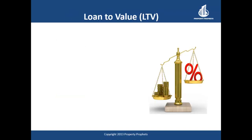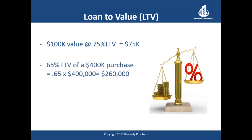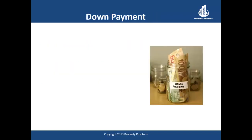The first term you need to become familiar with is loan-to-value. This refers to the amount of loan or mortgage compared to the value of the property. So if a property was appraised at $100,000 and the loan-to-value was 75%, the loan would be for $75,000. If a lender offers you 65% loan-to-value on a $400,000 purchase, the loan amount will be $260,000. This means you must come up with a 35% down payment, or $140,000. LTV — loan-to-value — will be a common term used as we move forward.